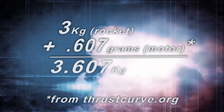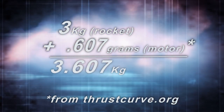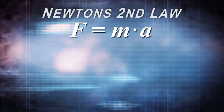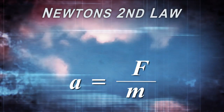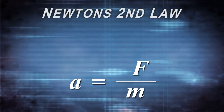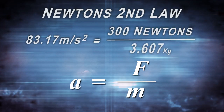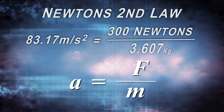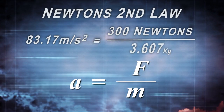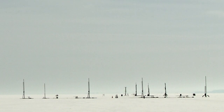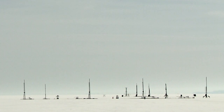Using Newton's second law, we can calculate the acceleration of the rocket from the force and mass. Force equals mass times acceleration, so rearranging, acceleration equals force divided by mass. We have 300 Newtons divided by 3.607 kilograms, giving an acceleration of 83.17 meters per second squared. The acceleration gets us one step closer to our exit rail velocity, but we still need to calculate the time between ignition and when the rocket leaves the rail.